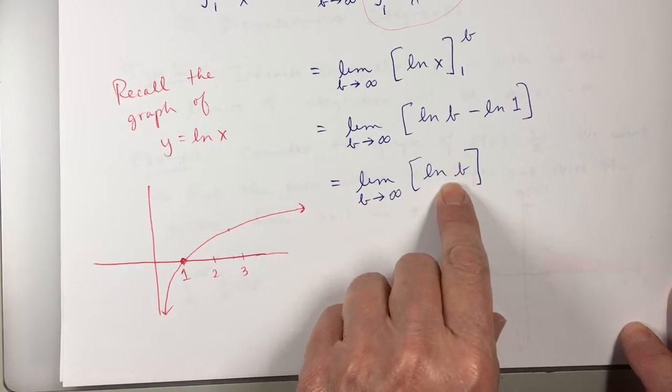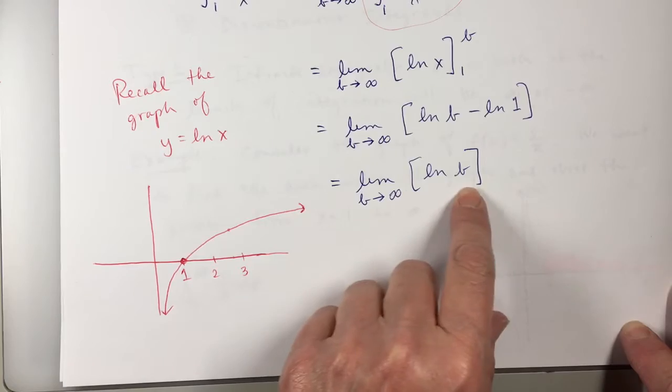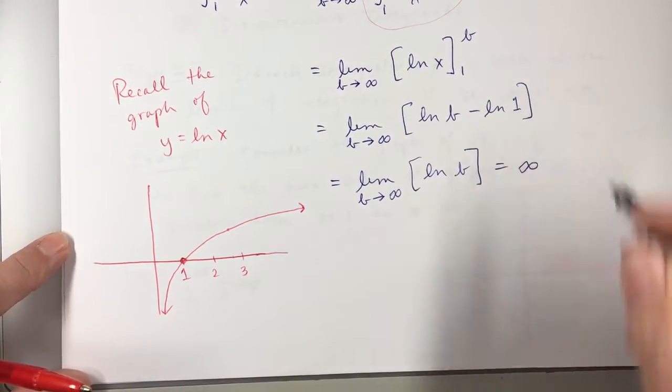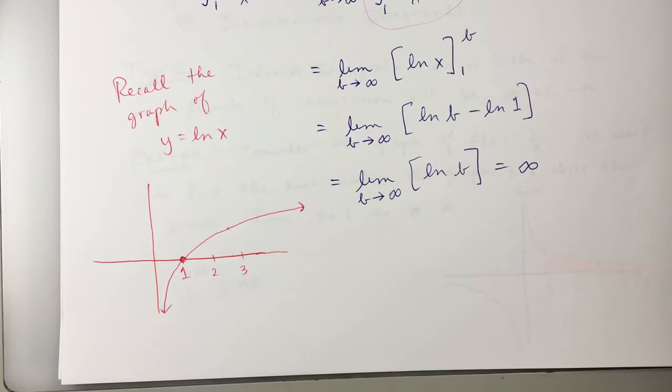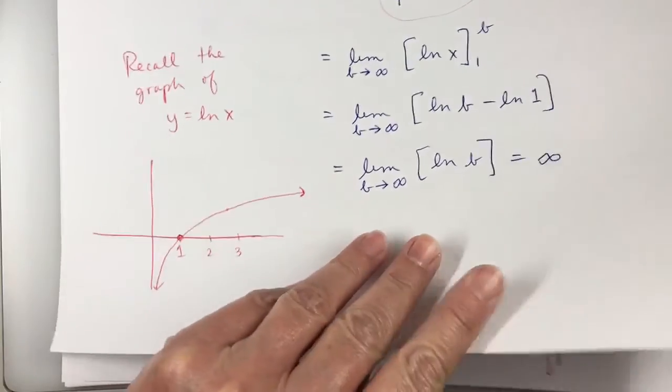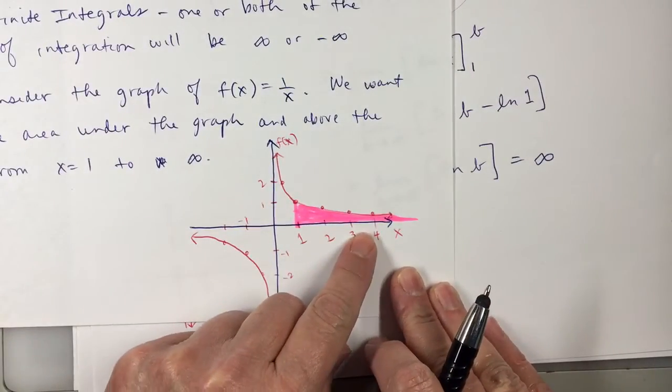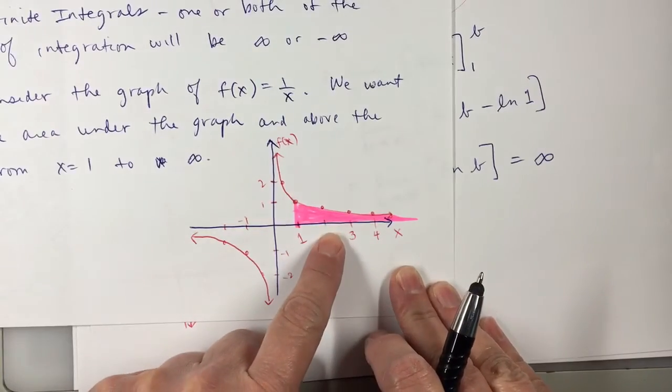So, as B approaches infinity, what does this equal? Infinity. This is infinity. So, this area that I was looking for, the area that I put in pink here, that area is infinite.